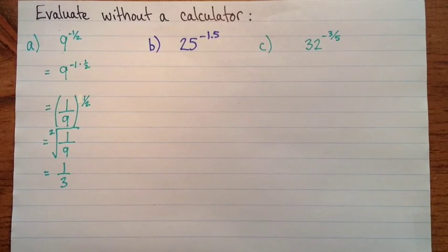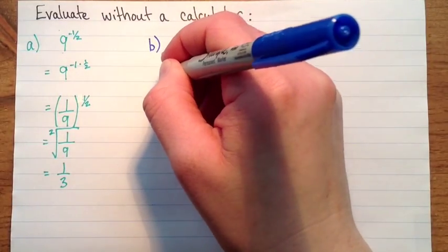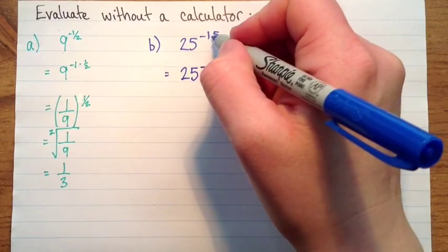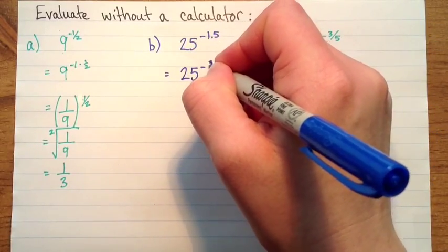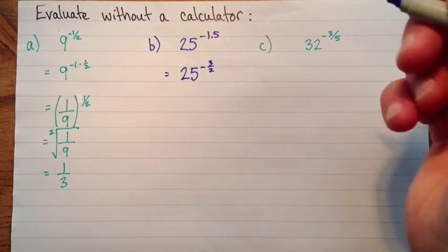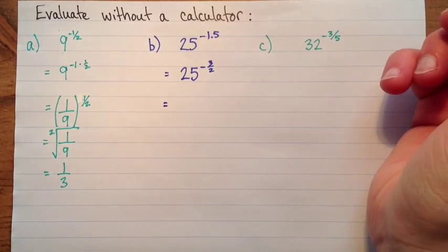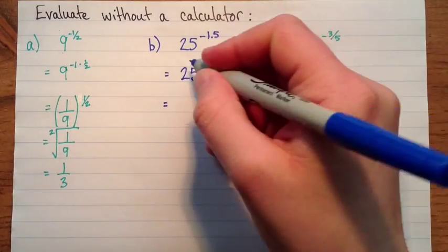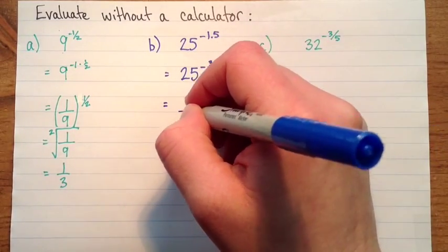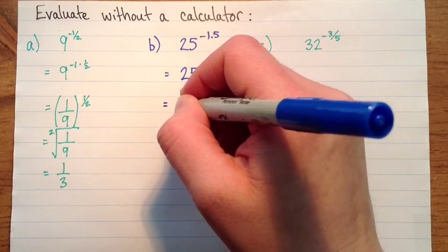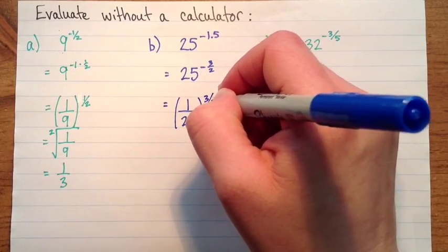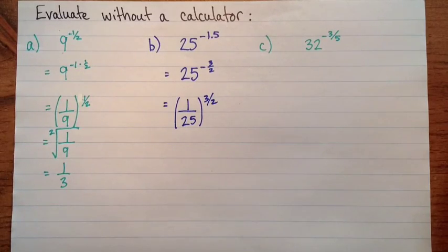Here's another one. We have 25 to the exponent negative 1.5. So almost any time you're dealing with exponents, it's easier to change all decimals to fractions. So I'll start off and do that. 25 to the exponent, and this is one and a half, so it's three over two. And now just like this one, I can do with the negative first, or the three over two first. I am going to do with the negative first. So we'll say this is one over 25 to the exponent positive three over two.